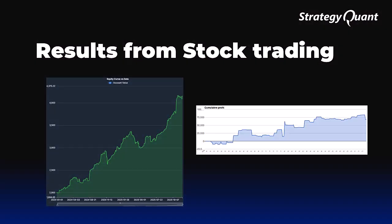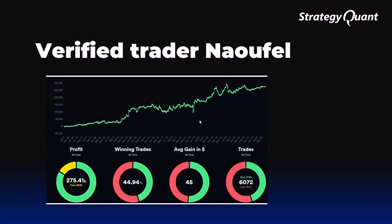Here are the results from stock-based strategies. Stocks add an important layer of diversification because they follow their own cycles of growth, correction and seasonal patterns. Their behavior is often very different from commodities and forex, which helps reduce overall portfolio volatility. This is Neofel, a verified trader who uses StrategyQuant to build his trading systems. Through systematic work and a well-structured portfolio, he is able to achieve consistent results and navigate market volatility with confidence.